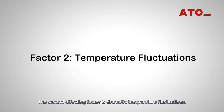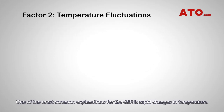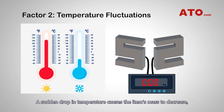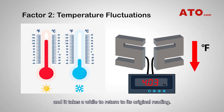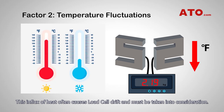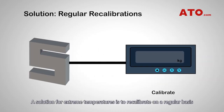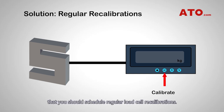The second affecting factor is dramatic temperature fluctuations. One of the most common explanations for drift is rapid changes in temperature. Mass increases and decreases based on the heat or coolness in the room on a micron level. A sudden drop in temperature causes the item's mass to decrease, and it takes a while to return to its original reading. This influx of heat often causes load cell drift and must be taken into consideration. A solution for extreme temperatures is to recalibrate on a regular basis if you cannot change the warehouse environmental conditions. In areas with different seasons, you should schedule regular load cell recalibrations.